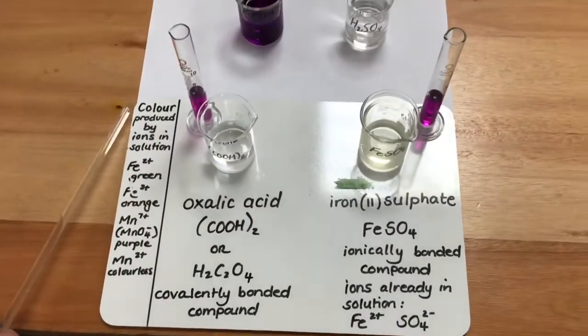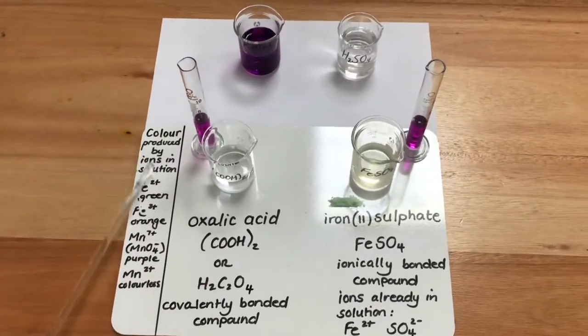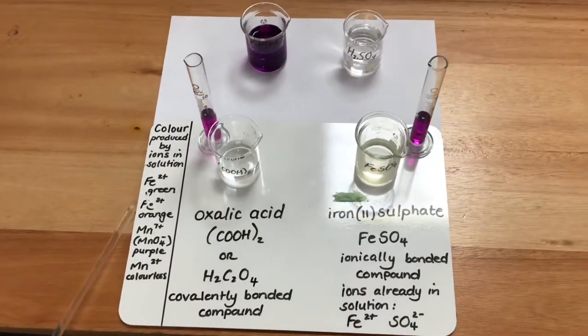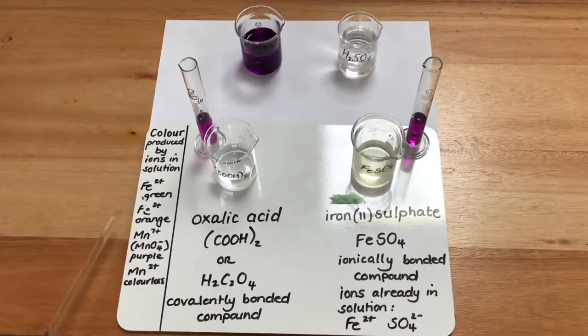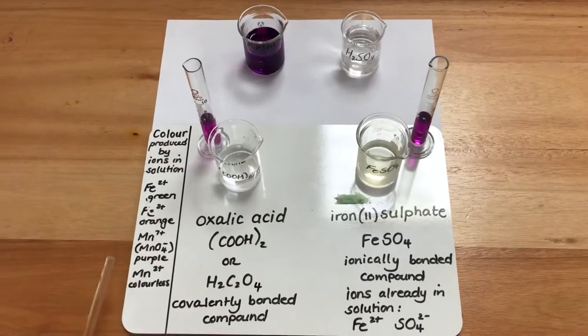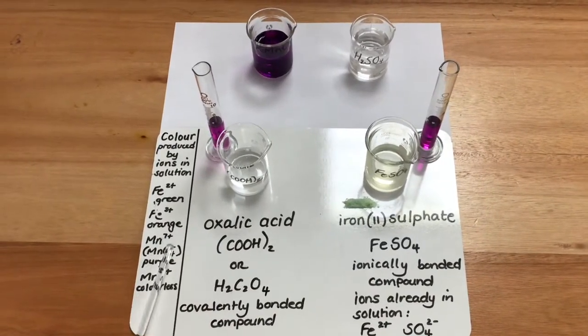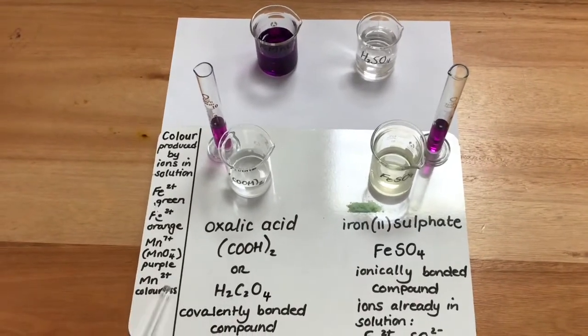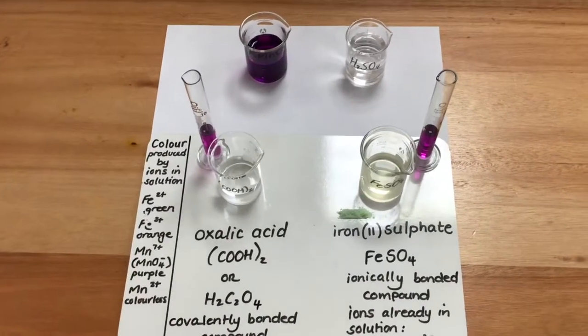Please take note of the color produced by various ions in solution. Fe²⁺ ions render solutions green, Fe³⁺ ions render solutions orange, Mn⁷⁺ in MnO₄⁻ render solutions purple, and Mn²⁺ render solutions colorless.